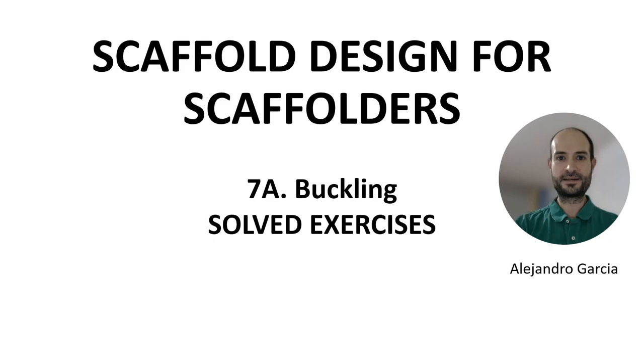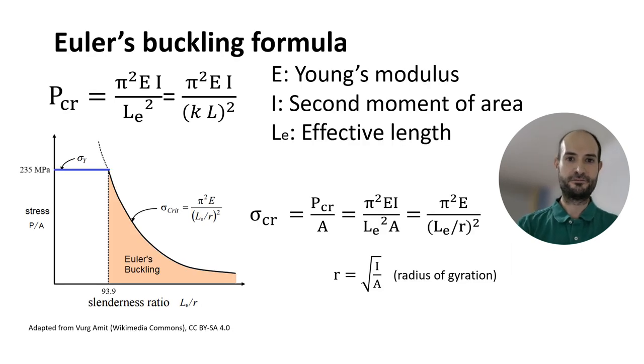If you remember, buckling is the sudden deformation of a column under an axial load below the material's capacity. We also talked about Euler's buckling formula. Remember it's equal to pi squared times the elastic modulus times the second moment of area divided by the effective length to the second.